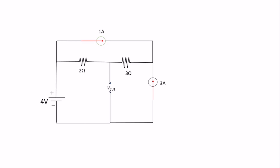Before that, let's find the total current moving back to the source. We have a one-ampere current moving through this line and a three-ampere current here, so when they meet, the total current will be four amps. The current flows in both directions around the node, and the total current passing through the two-ohm resistor is four amps.